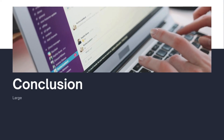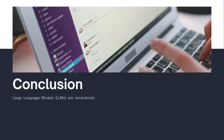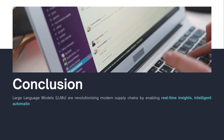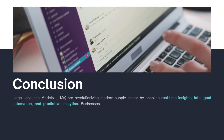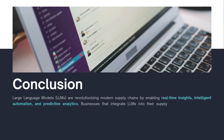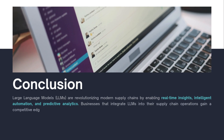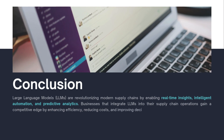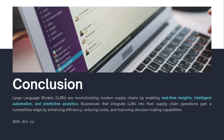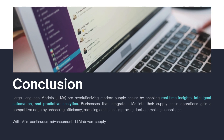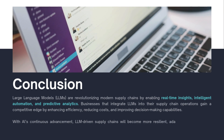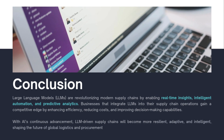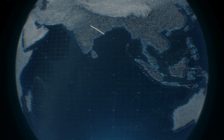Conclusion. Large language models (LLMs) are revolutionizing modern supply chains by enabling real-time insights, intelligent automation, and predictive analytics. Businesses that integrate LLMs into their supply chain operations gain a competitive edge by enhancing efficiency, reducing costs, and improving decision-making capabilities. With AI's continuous advancement, LLM-driven supply chains will become more resilient, adaptive, and intelligent, shaping the future of global logistics and procurement.